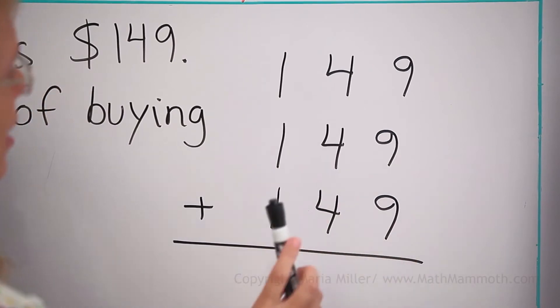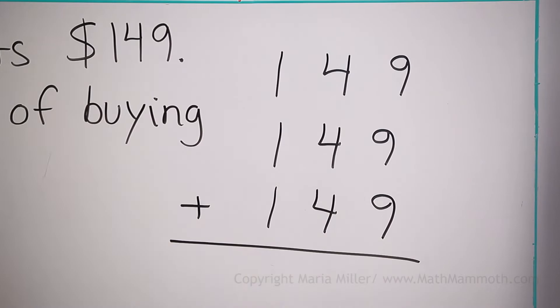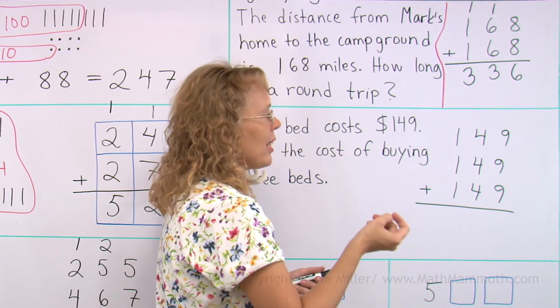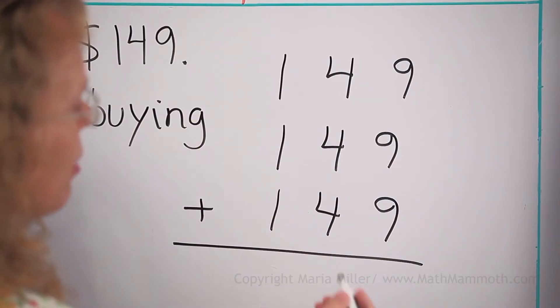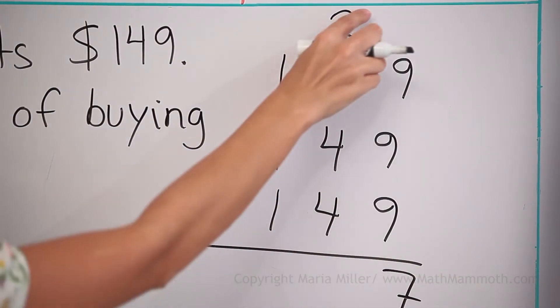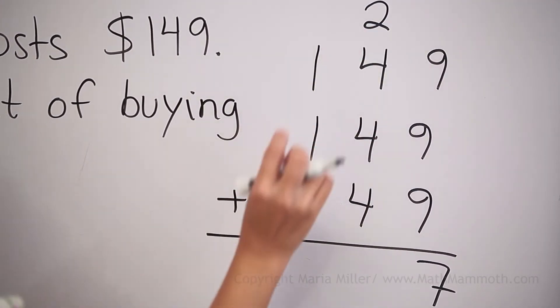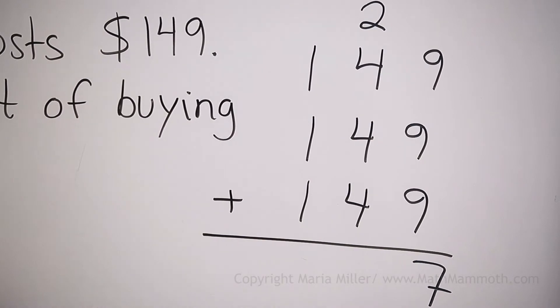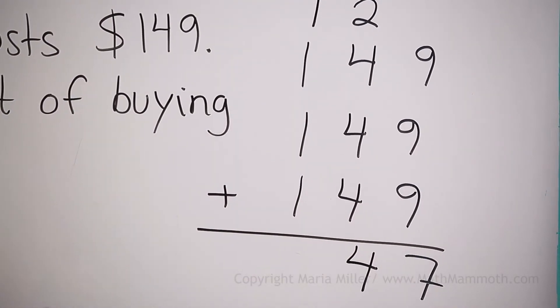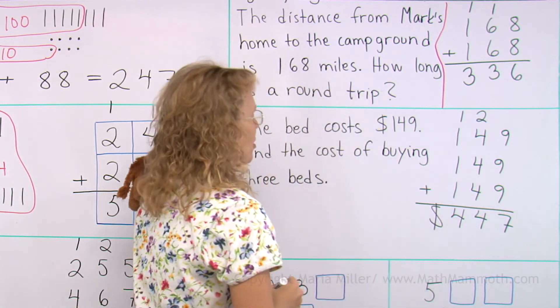9 plus 9 plus 9. Well, 9 and 9 is 18 and then 18 and 9. You can think of the 9 trick, maybe, or you can think of 18 and 10 would be 28, but it's one less than that. 27. So that means 2 here, 7 here. 27. 2 tenths goes here. And then we have 4, 4, 4 and 2. These make 12 and 2 more. So 14. 14 means 1 here, 4 here. Regrouping. And then over here we have 4. So, $447.